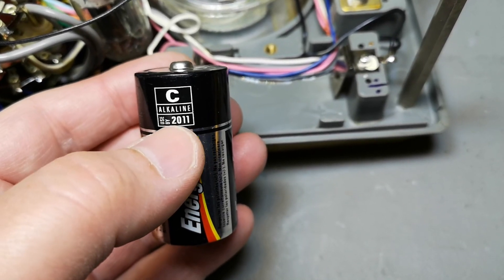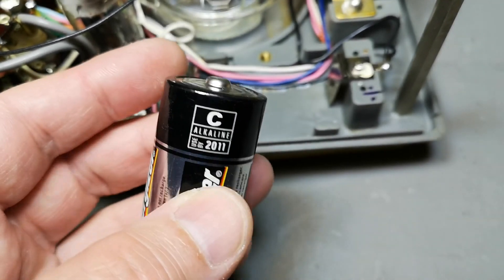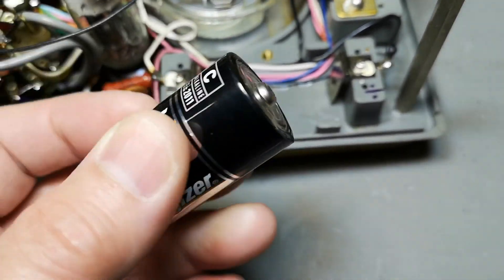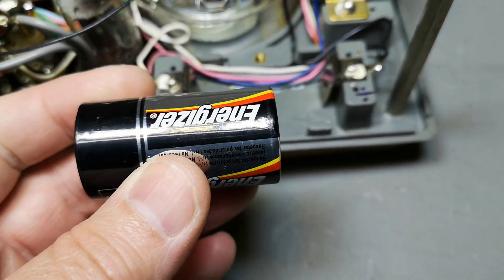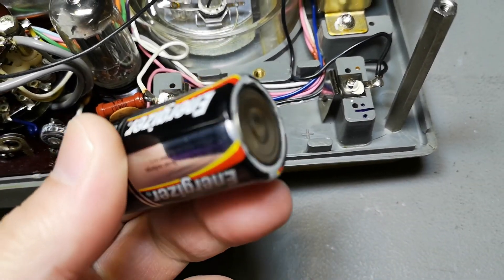But then I looked at this - 'used by 2011', so that is 11 years ago it was supposed to be used before that. When you buy a new one, it is like four or five years until the use-by date. That means this one could be about 15 years old, and there's still 1.55 volts on it. That is a little bit amazing.